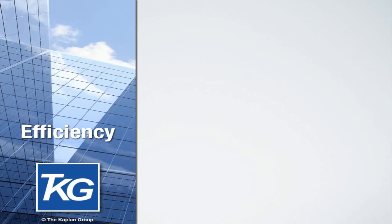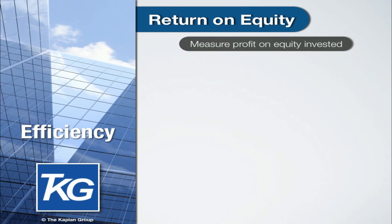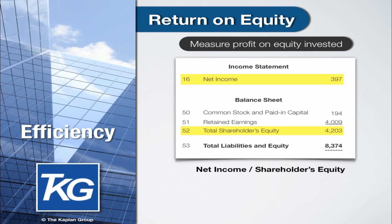Next we are going to measure how efficiently management is running the company. The first ratio we'll look at is return on equity. This is a measure of the company's earnings on the equity that the shareholders have invested. We simply take the net income and divide it by shareholders' equity. In this example, $397,000 of net income divided by $4,203,000 of shareholders' equity gives us a return on equity of 9.45%. In today's market with low inflation and high risk, people are happy with a 9% return. It would be good to compare this return on equity to other companies in the same line of business to get a better idea of how well this management team is generating a profit compared to its peers.